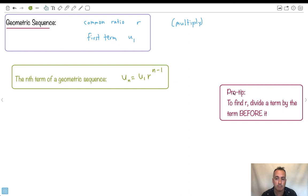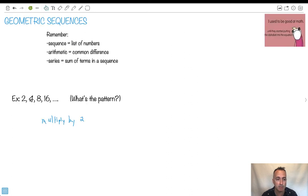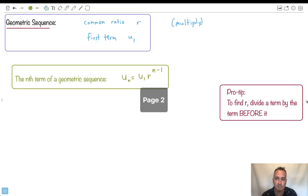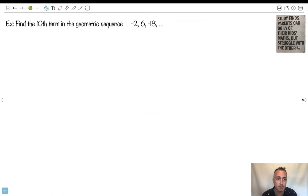Now to find R, this is a pro tip here: you're going to divide any term by the number before it. So in other words, if we were going to find this one here we would do 4 divided by 2 and that would give us 2, right? But 8 divided by 4 also gives us 2. And 16 over 8 also gives us 2. That's sort of how we can find R. I like this one: students find parents can do one-third of their kids math but struggle with the other three-fourths. Makes me smile.